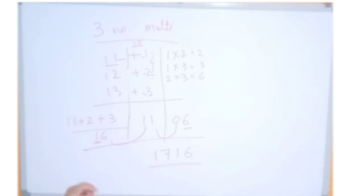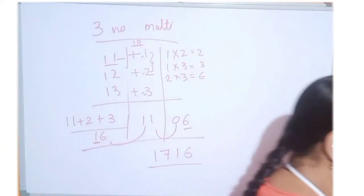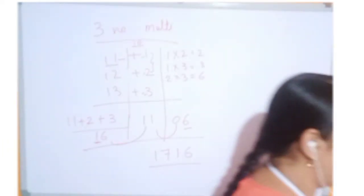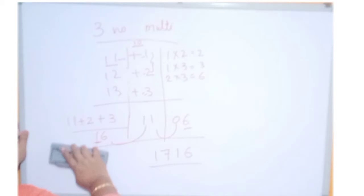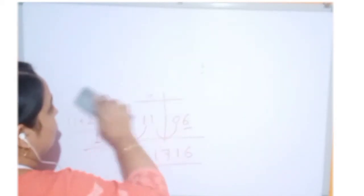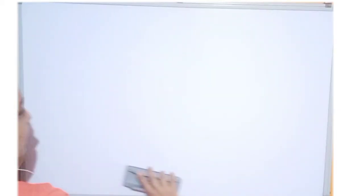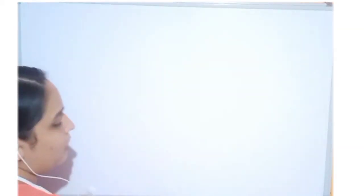This is how we can implement the rules and get the answer for any 3 digit numbers. Let us try few more examples so that you get more clearance. Let us try for bigger digits now.